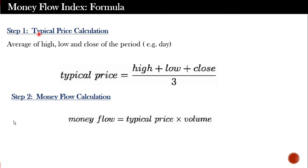Let's try to understand how the Money Flow Index is calculated. There are multiple steps. The first step is calculation of a term called 'typical price.' Typical price is the average of the high price, low price, and closing price for that day or time frame. So typical price is nothing else but the average of high, low, and close of the period.